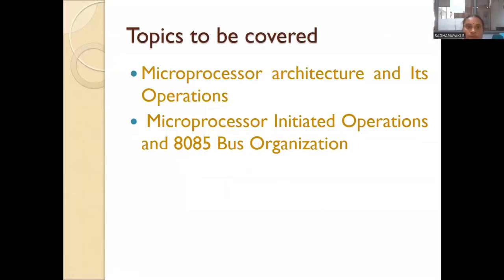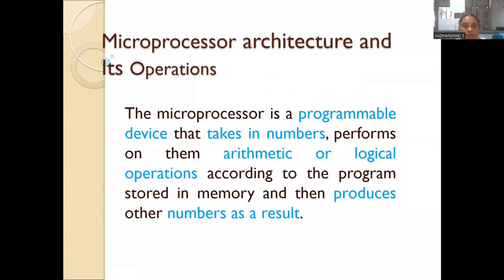Today we are going to see about microprocessor architecture and its operations, microprocessor initiated operations, and 8085 bus organization. A microprocessor is a programmable device that takes in numbers, performs some arithmetic or logical operations according to the programs stored on it, and then produces some other numbers as a result. So a microprocessor is nothing but a programmable device — we can program it according to our needs.